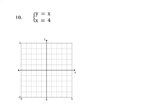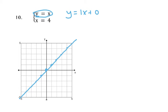Number 10: the first equation is y equals x. That's y equals 1x plus 0, so I'm going to have a y-intercept of 0 and a slope of 1. That's the parent function of linear equations. All of these points on the line are what makes the line — an infinite number of points, and they're all solutions. Every single one of them is a solution to that line.